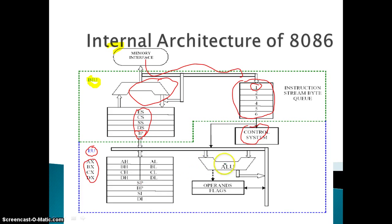The ALU, as the name indicates, performs both arithmetic and logical operations and provides the result along with the status of that result within the flag bits. The 8086 supports nine flag bits, which include interrupt-related flag bits and arithmetic flag bits.